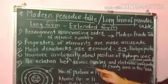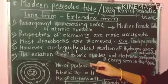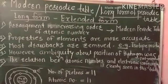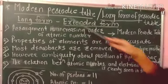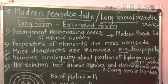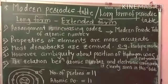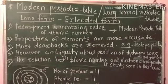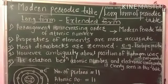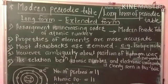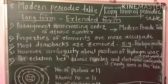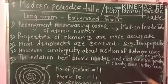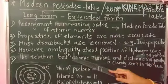The next point: the ambiguity about the position of hydrogen has not been removed in the modern periodic table. In Mendeleev's periodic table, there is no fixed position for hydrogen, but in the modern periodic table there is no such confusion.